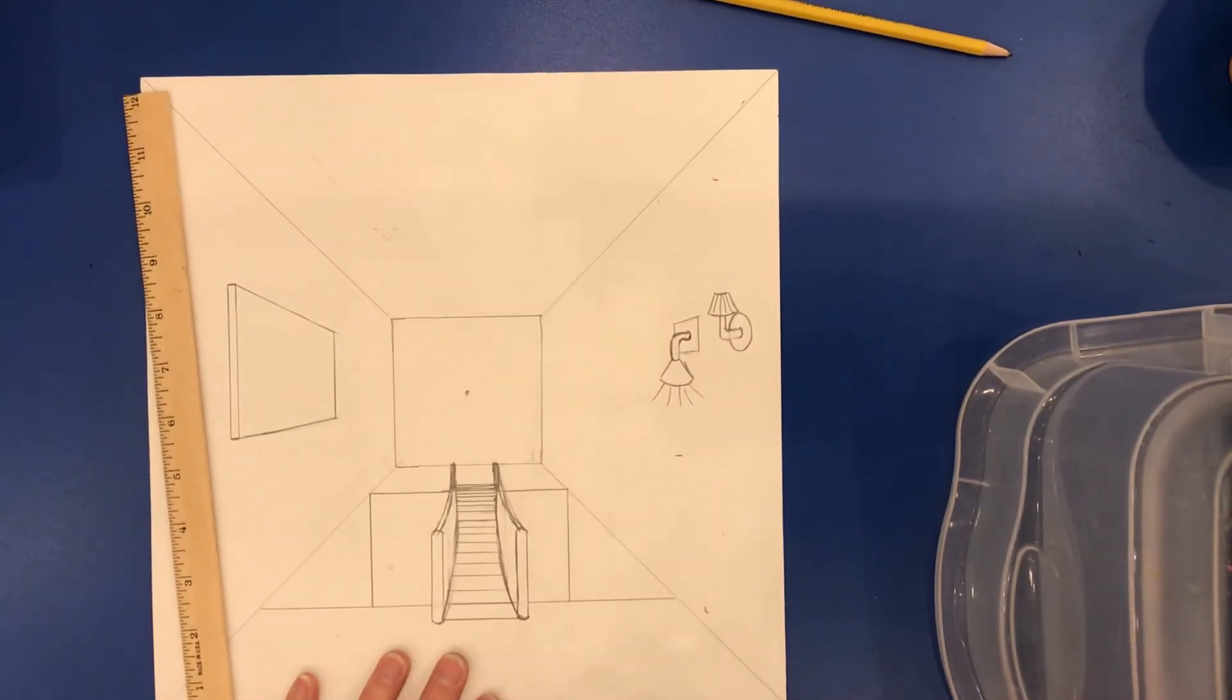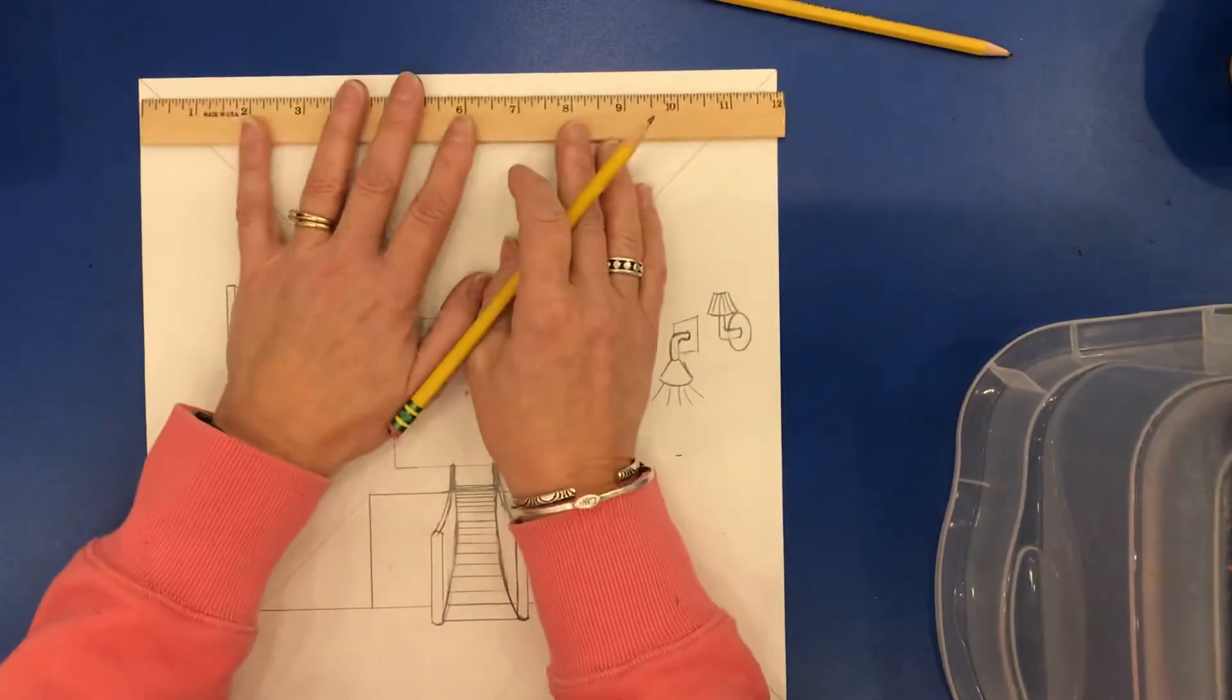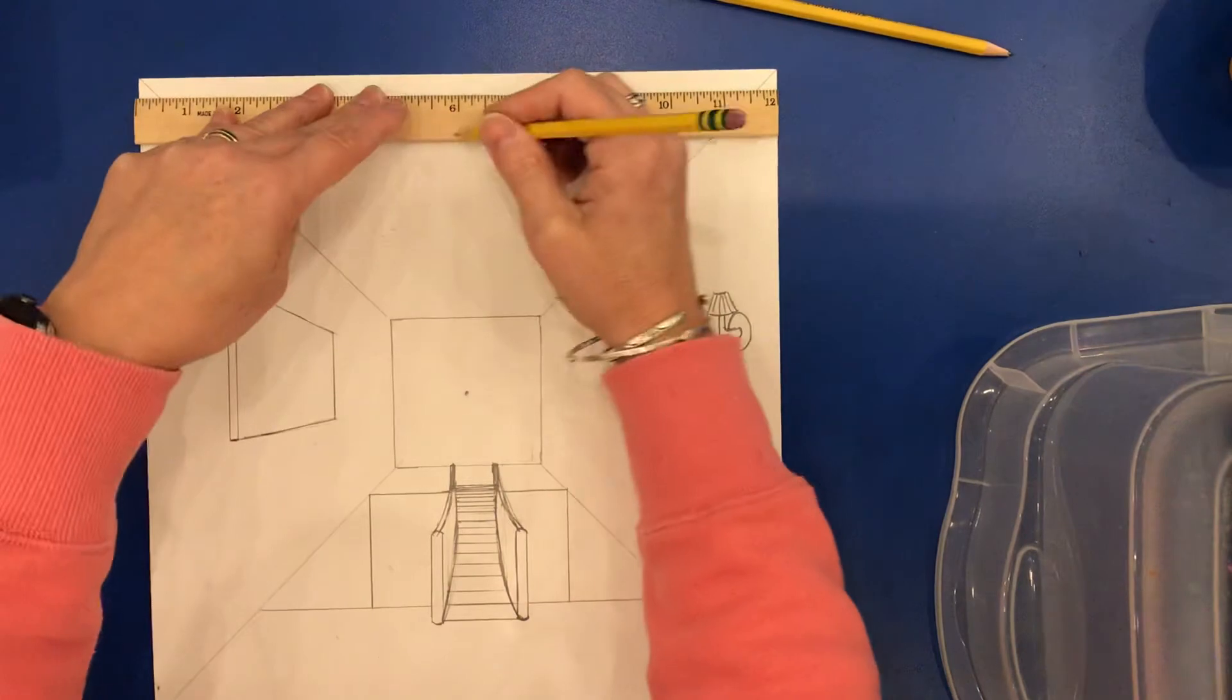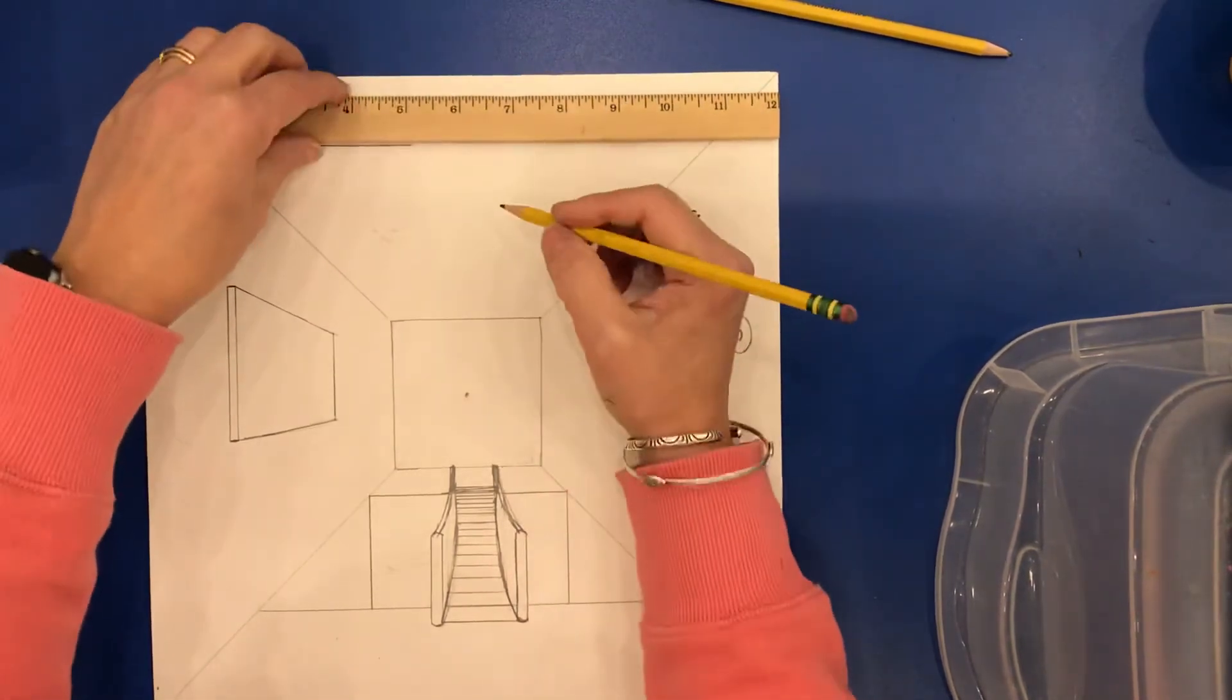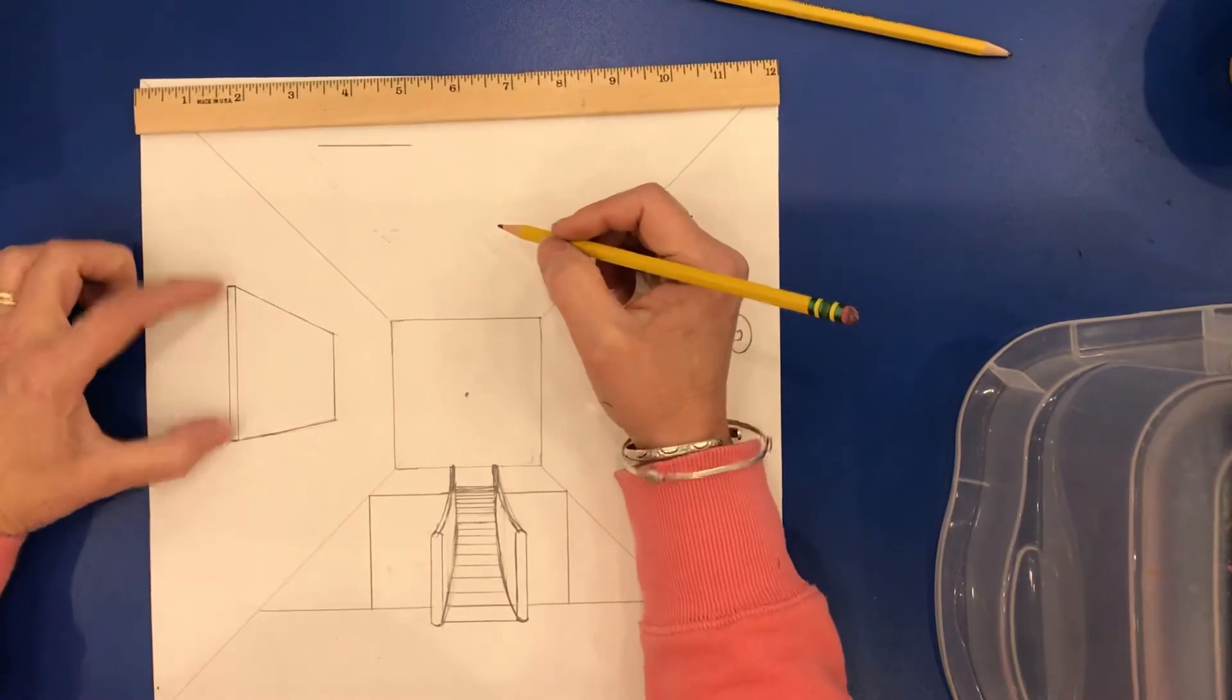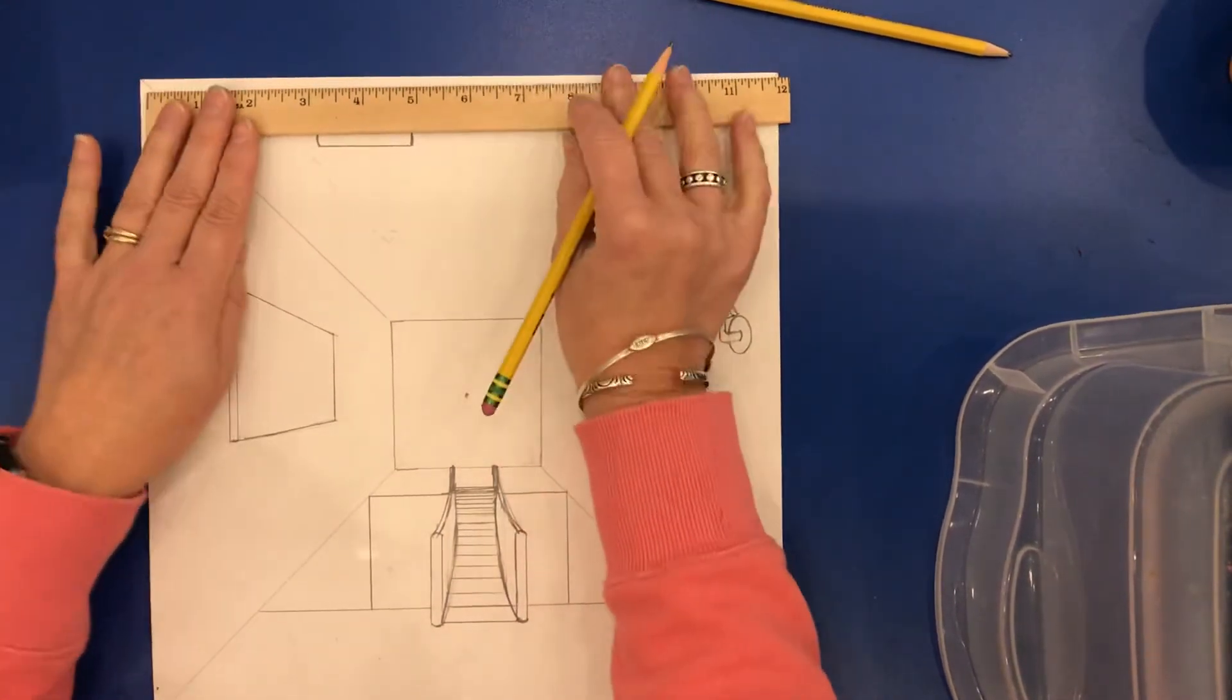If you're doing fluorescent lamps up on top, fluorescent lights, same thing. You would start at the top. I'm just going to go ahead and put in a fluorescent light here. Start at the top. Again, I would need to show the thickness of the fluorescent lamp or the fluorescent light.